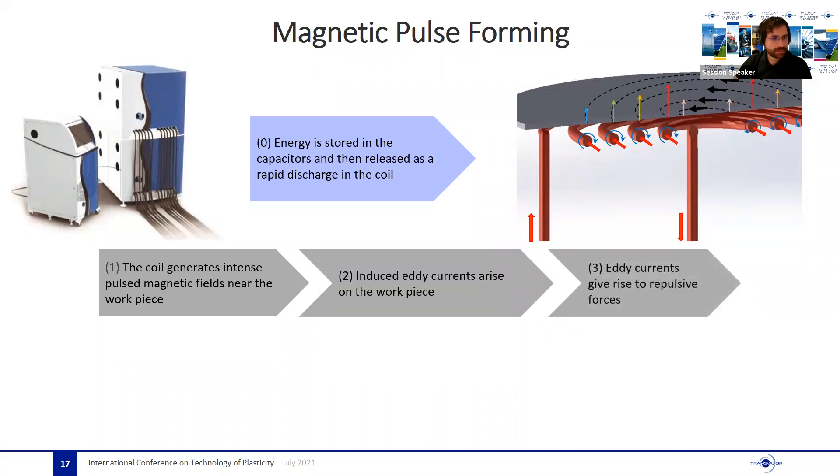From here, eddy currents arise in the part and then the Lorentz forces appear. From here, the forming is achieved due to the transformation of the energy into kinetic and plastic energy.